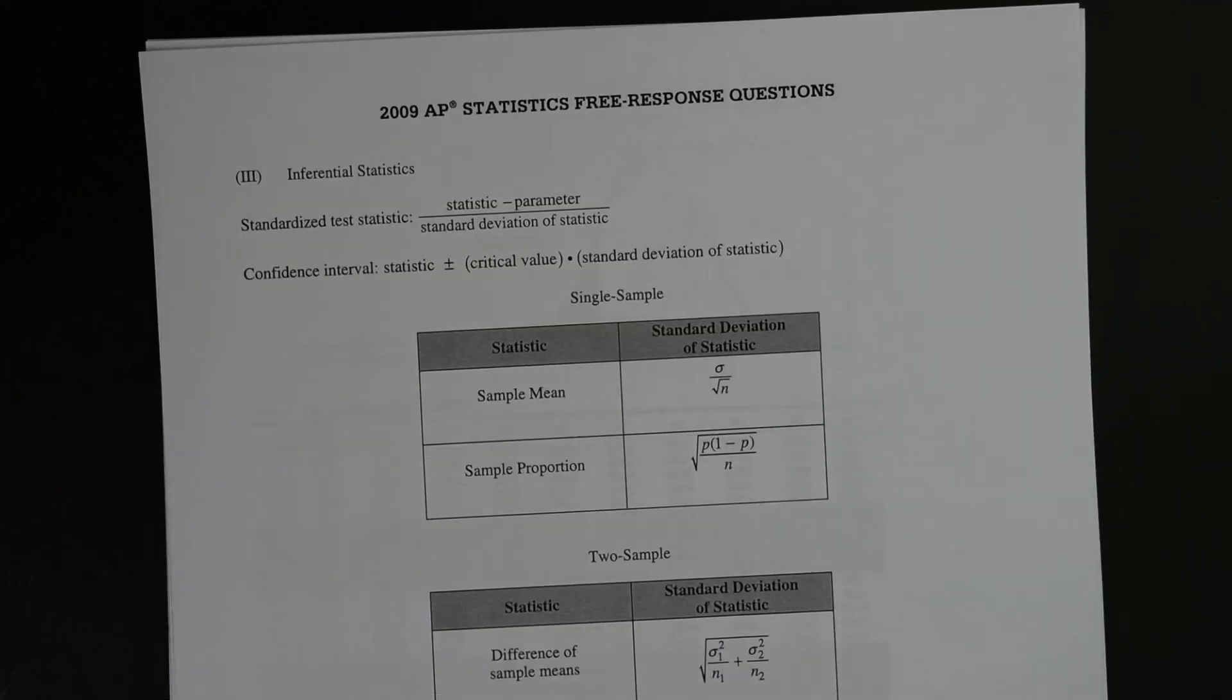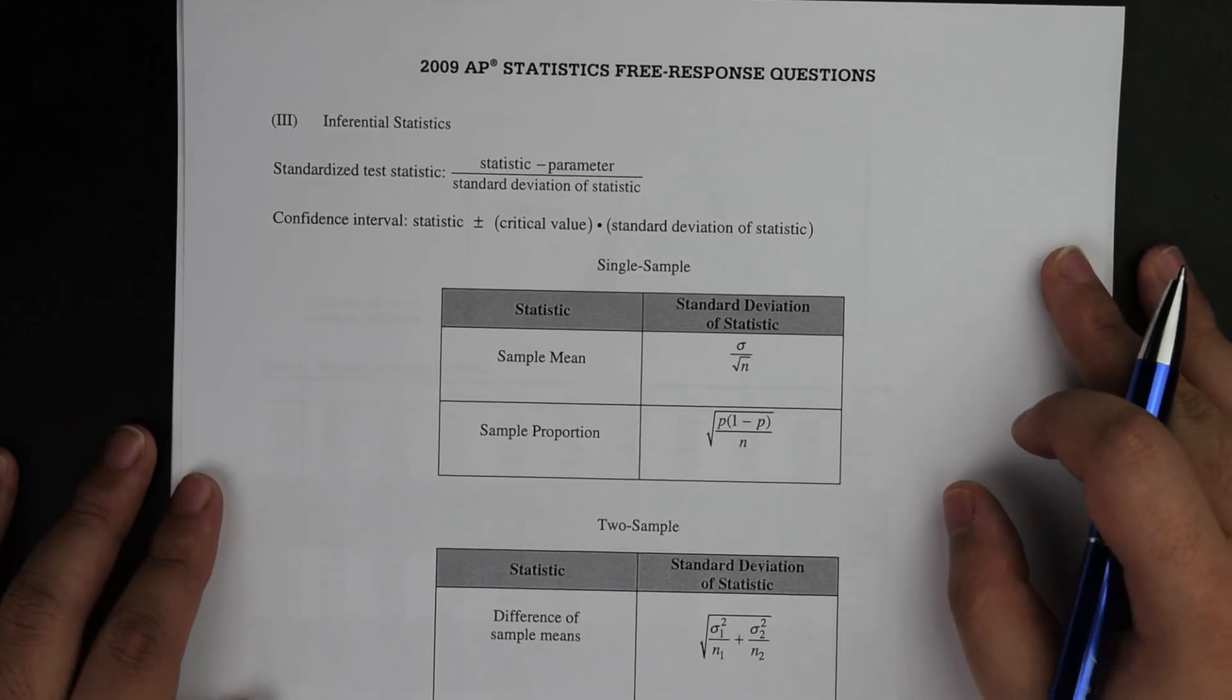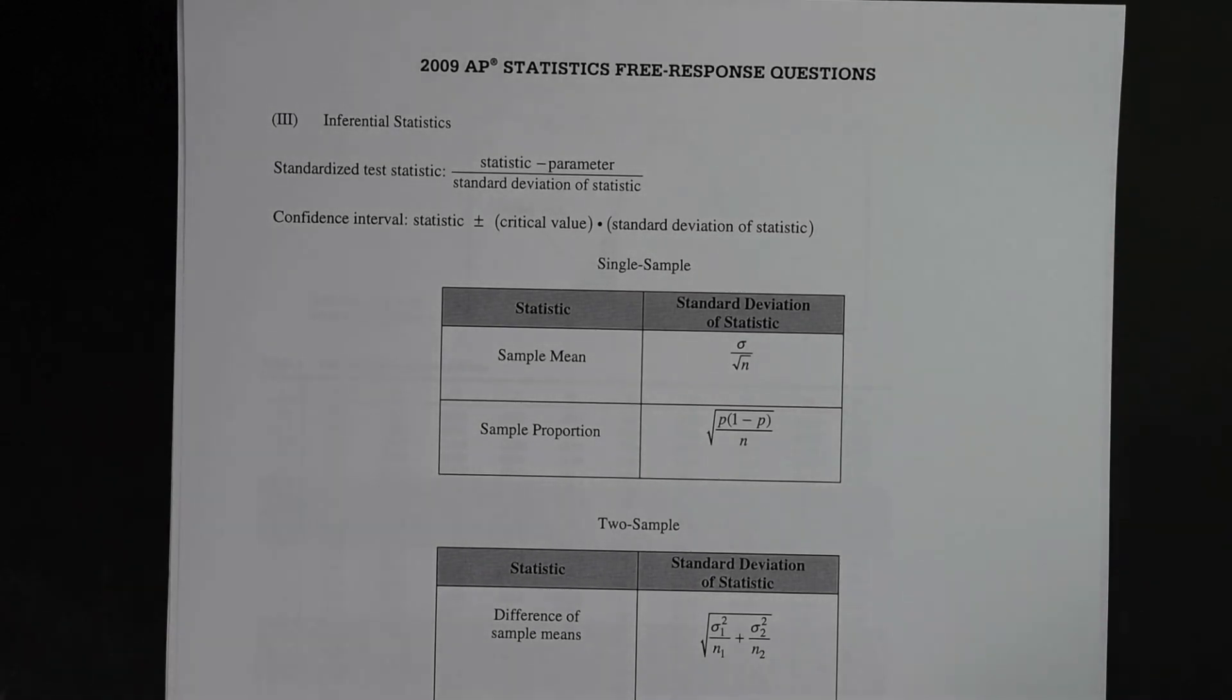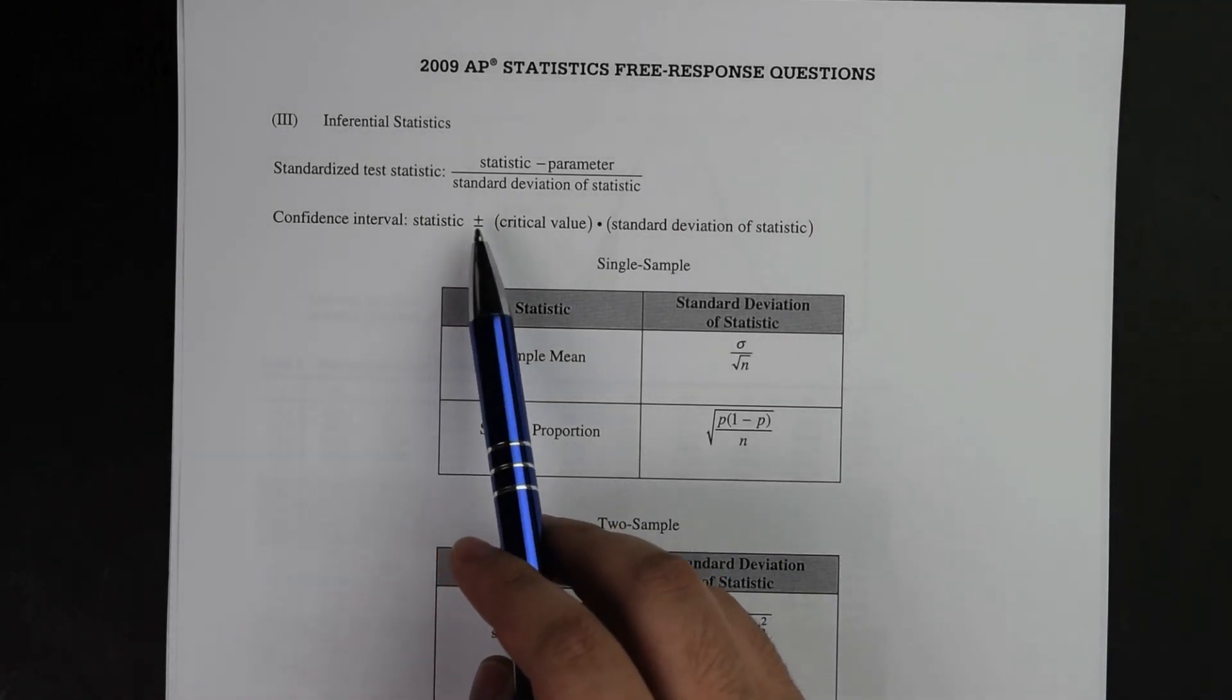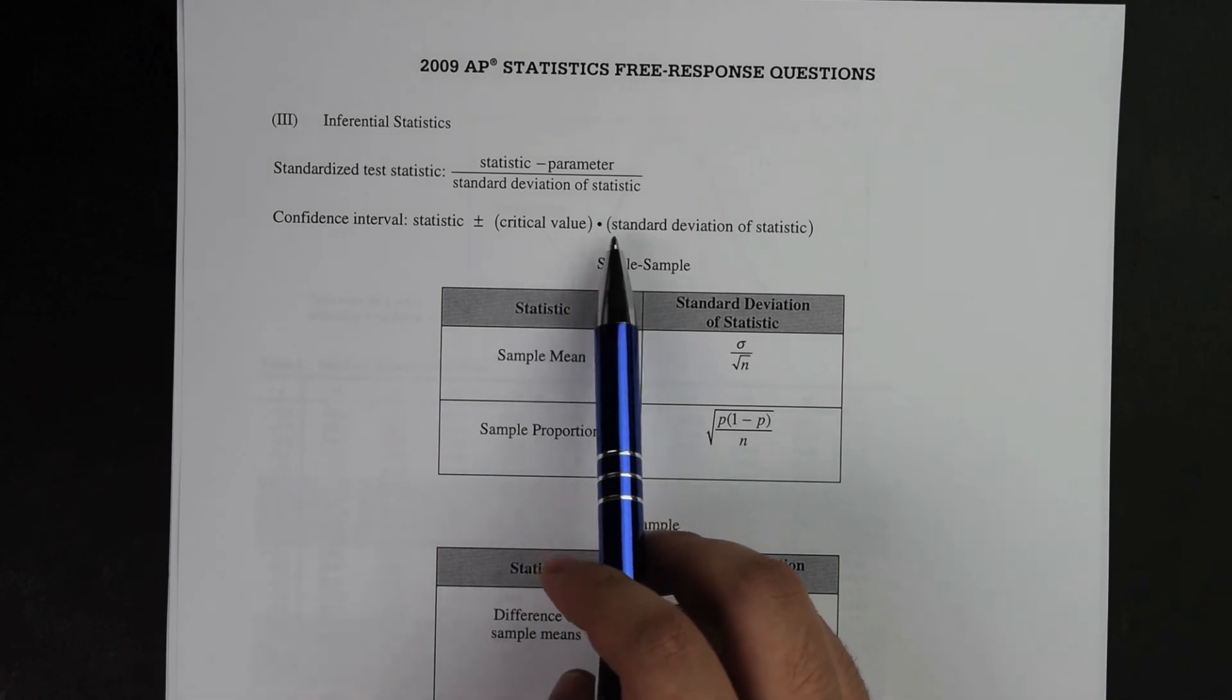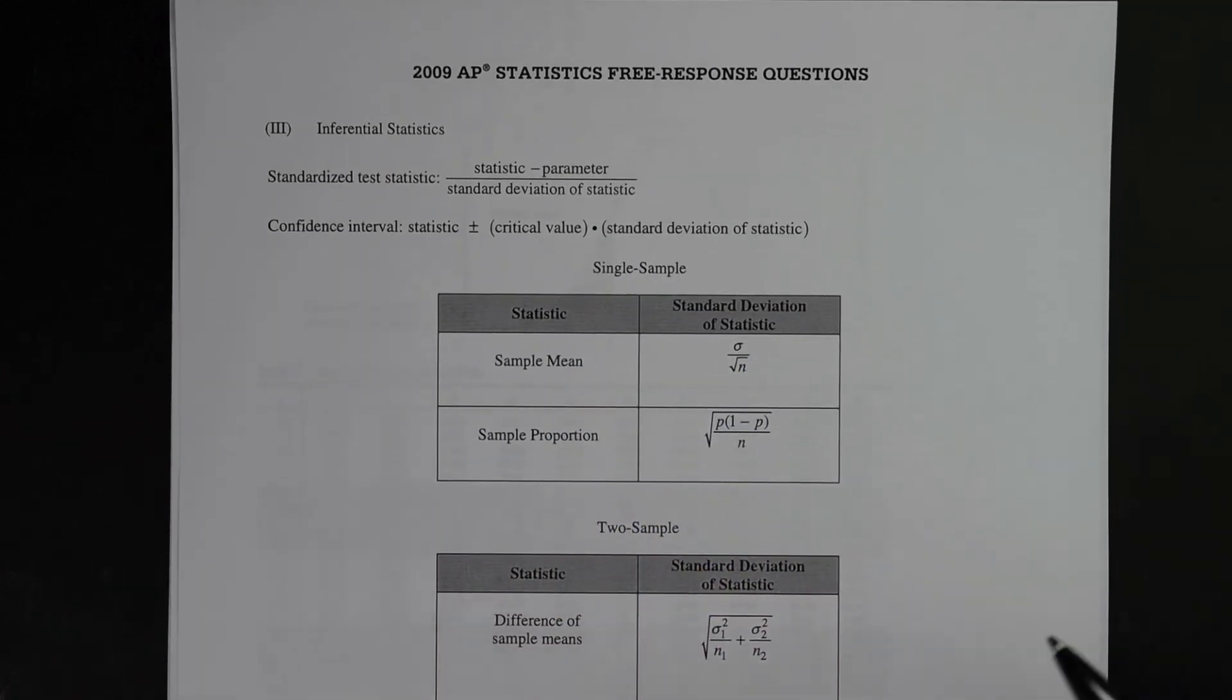There is also a page right here which is going to be very useful to you. The concept today I'm talking about is confidence intervals, and they actually mention right here: confidence interval equals the statistic plus or minus the critical value times the standard deviation of statistic. I'm going to go more in depth about what that means.